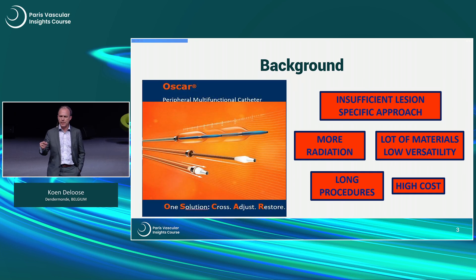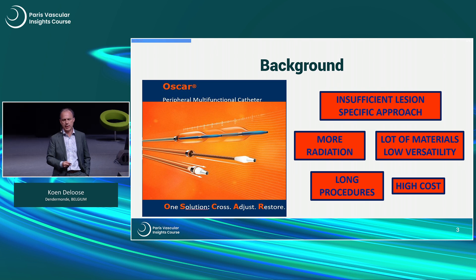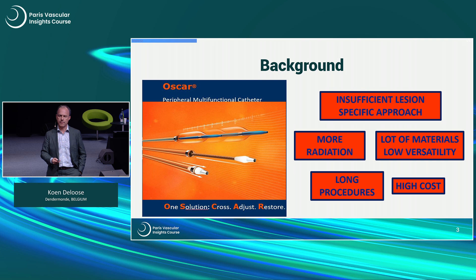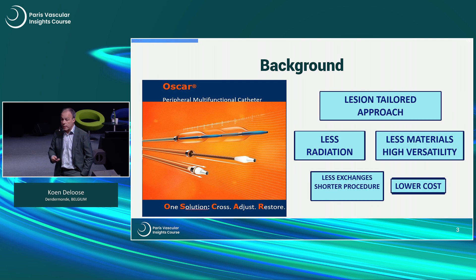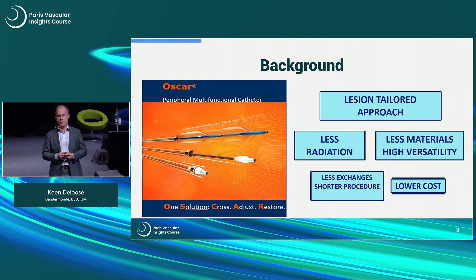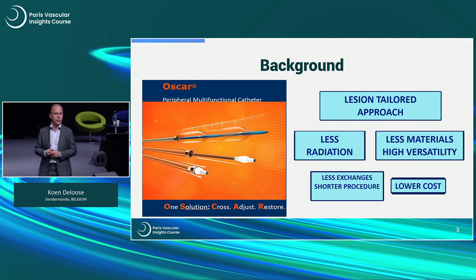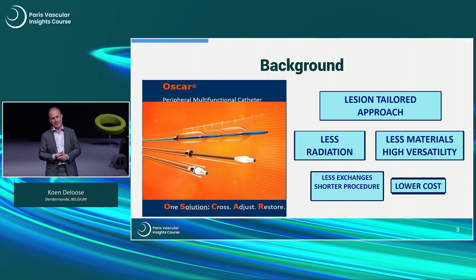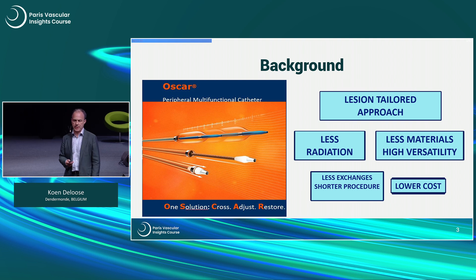Probably with a multifunctional device like the Oscar device from Biotronik, there is one solution: crossing, adjusting, and restoring all in one. This creates a more lesion-tailored approach, less material used during the procedure, lower cost, less radiation, and fewer exchanges with shorter procedures.